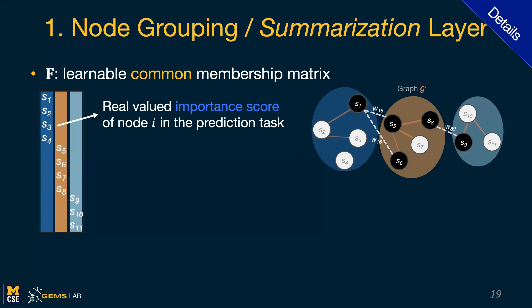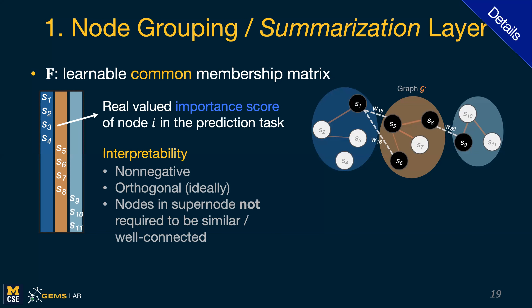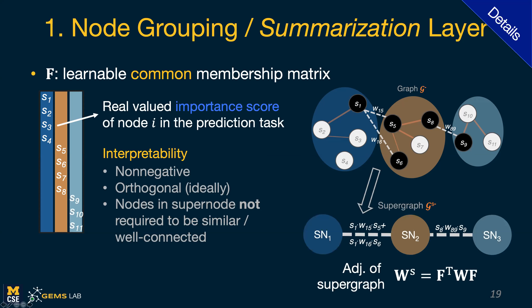In a little more detail, essentially what we're doing is learning a common membership matrix F, which says which node belongs to which super node. The values in this common membership matrix capture the importance score of a node for the prediction task — how much it is contributing to the prediction. For interpretability, we apply several constraints: we want this matrix to be non-negative so we can interpret its values, and also orthogonal. While in summarization we often aggregate nodes that are well connected, here this is not a requirement — we learn how to aggregate nodes so that we can highlight the important edges.